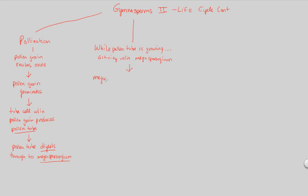The megasporocyte — the larger cellular structure within the megasporangium — is going to produce 4 haploid cells. We're going from 2N; the sporocyte, which is always 2N, produces 4 haploid (N) cells. How? Not through magic, but through meiosis. Anytime you see sporocyte, in order for the haploid version to develop, you need meiosis, and that's exactly what happens here.